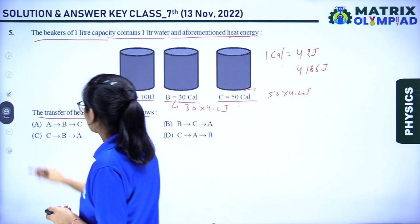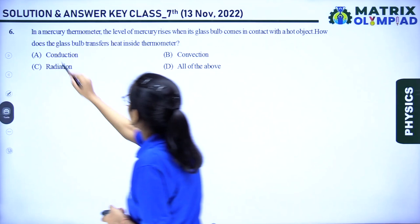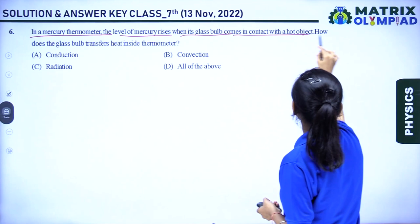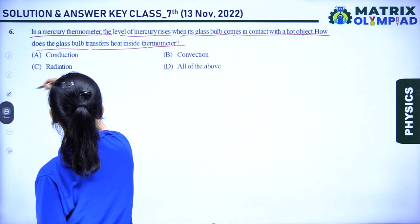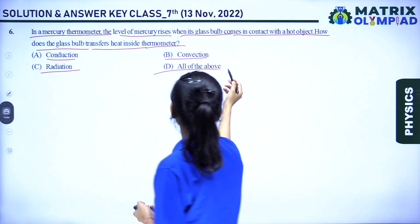Question number 6: in a mercury thermometer, the level of mercury rises when the glass bulb contacts a hot object. How does the glass bulb transfer heat inside the thermometer? The method of heat transfer used here is conduction. So the answer to question 6 is option A.